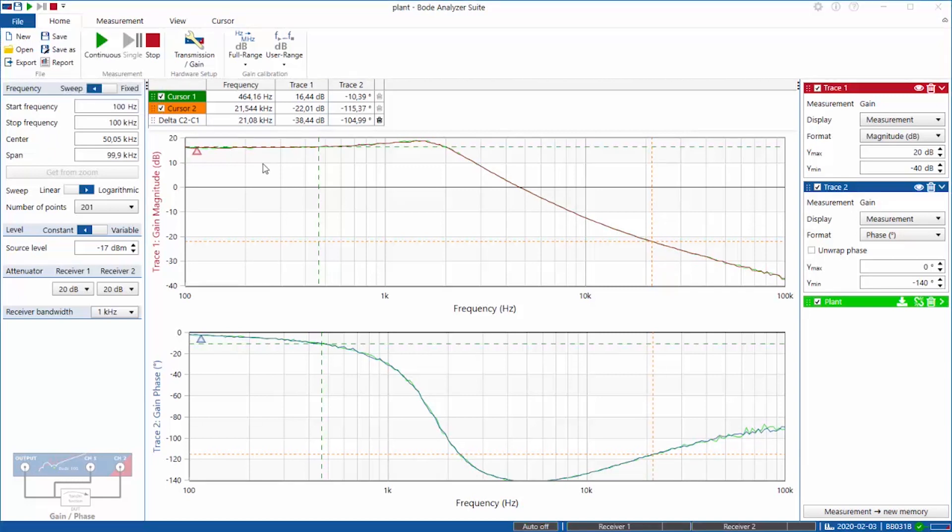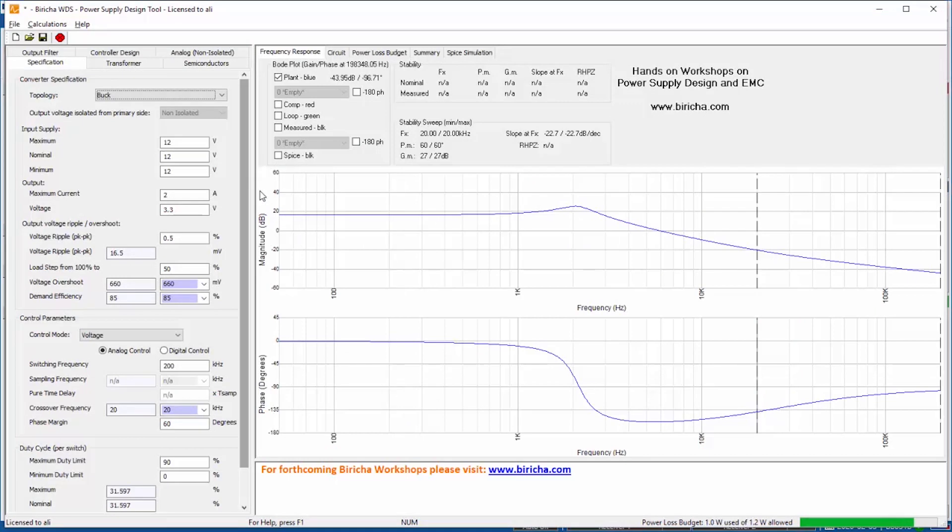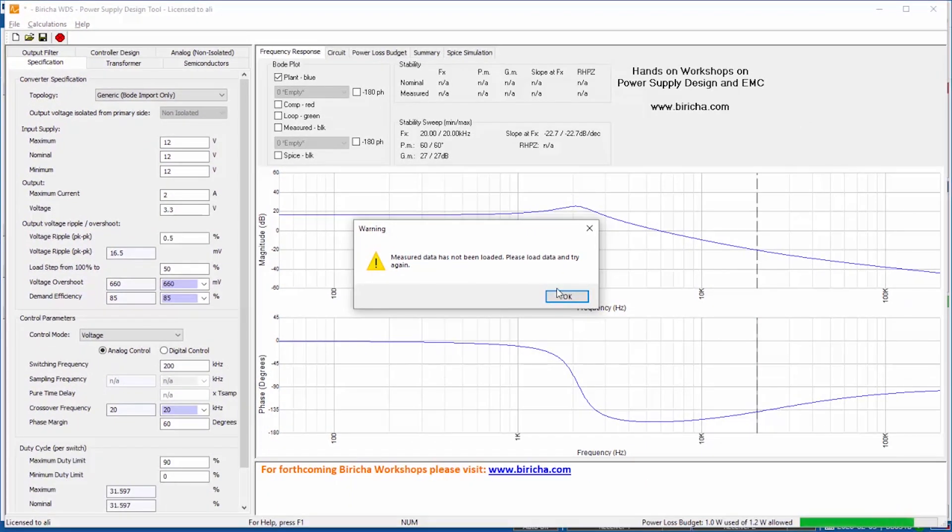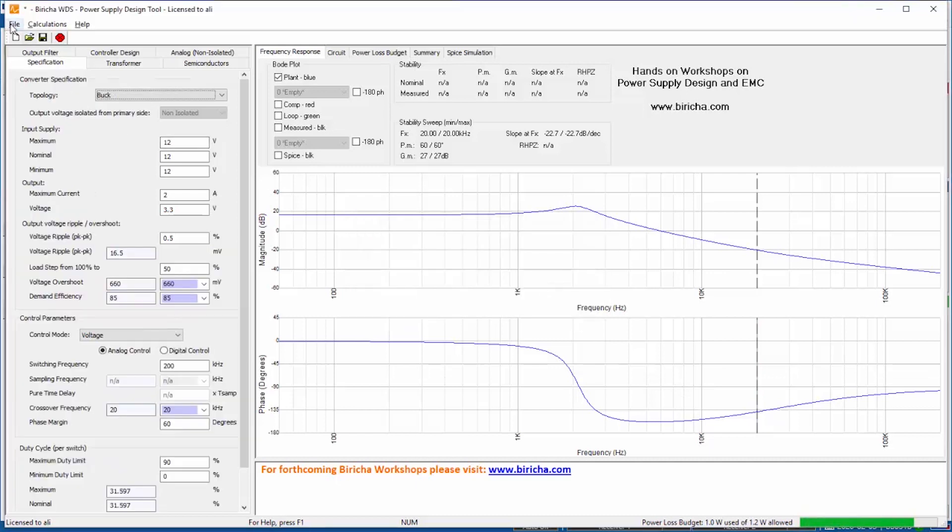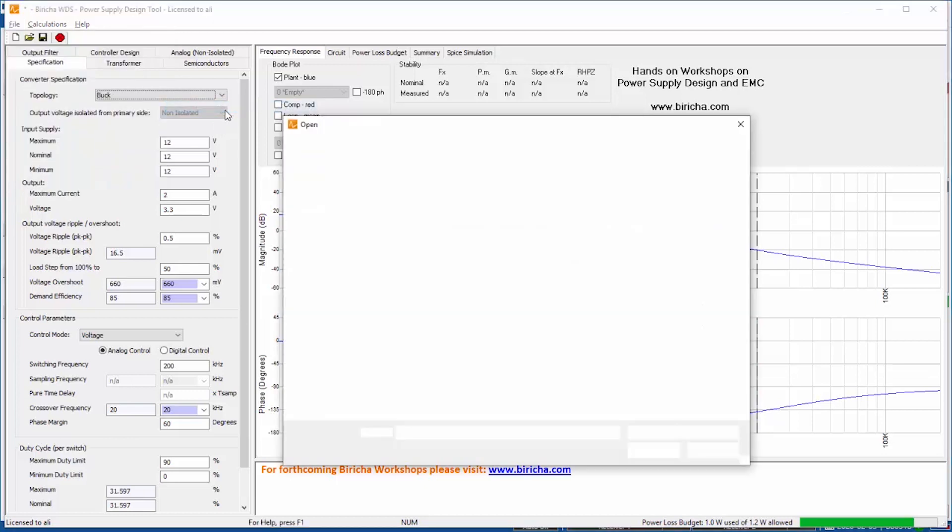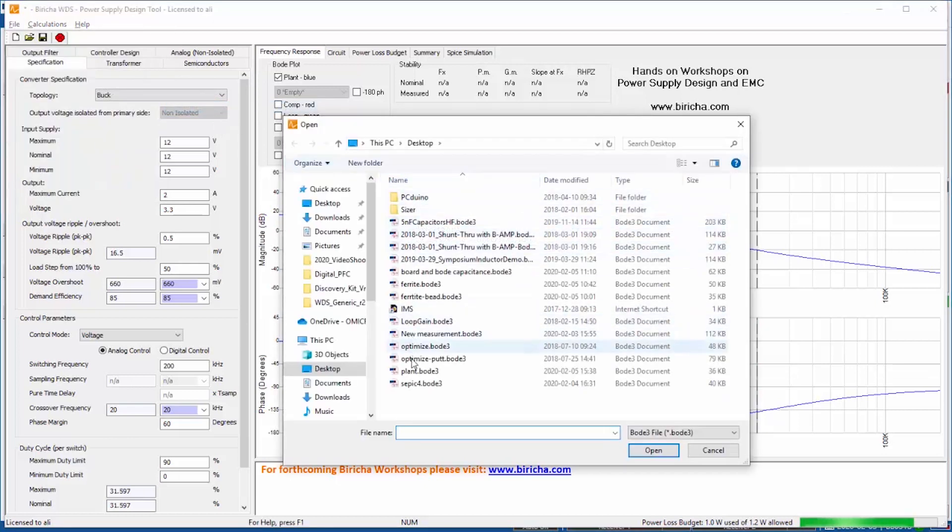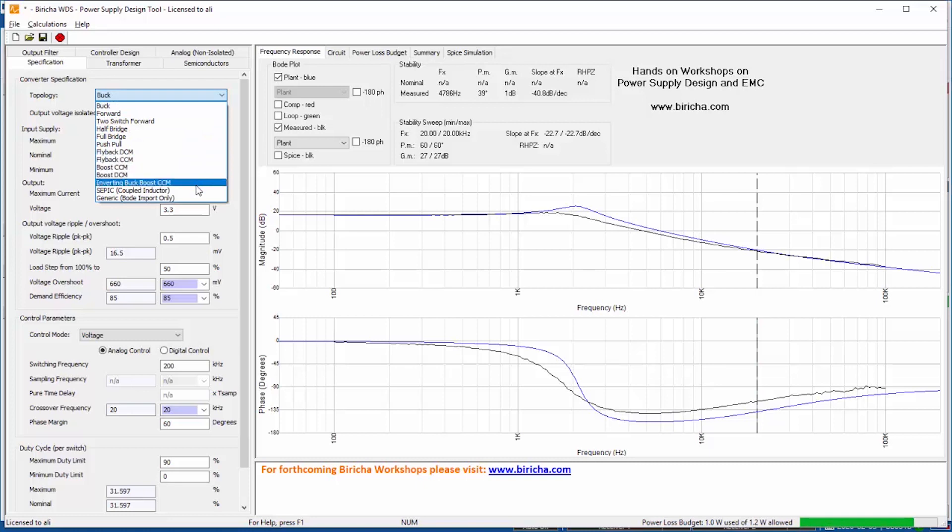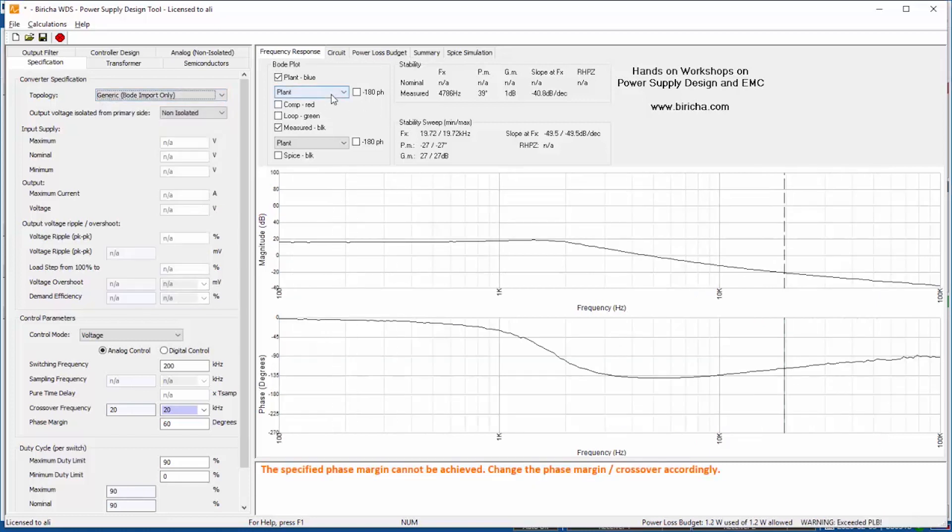Now I'm going to open WDS. This is what you'll see when you open WDS first. I can select different topologies, but now we've added this new feature called Generic Bode Import Only. That means WDS doesn't care what topology you've got—all it needs is the measurement of the plant which I just saved. So I select this. I first import my Bode import—I go to plant which I just saved. There we go.